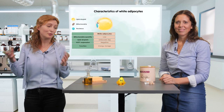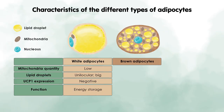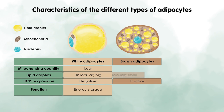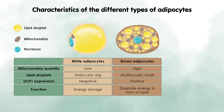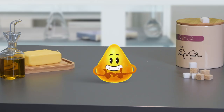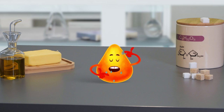But for now, let's move on to the brown adipocytes. They look a lot different than white adipocytes. They are characterized by having multiple lipid droplets and mitochondria which express a protein called UCP1, or uncoupling protein 1. Their main function is to dissipate energy in the form of heat — in other words, fat is burned there.